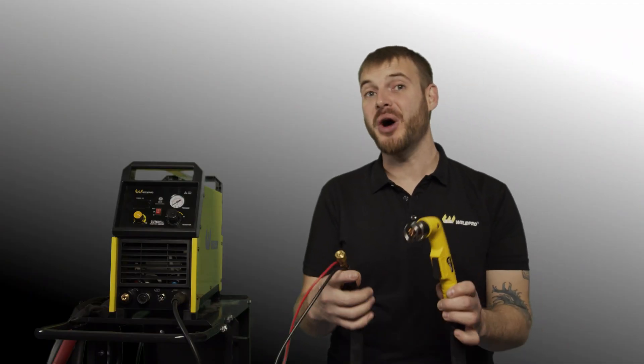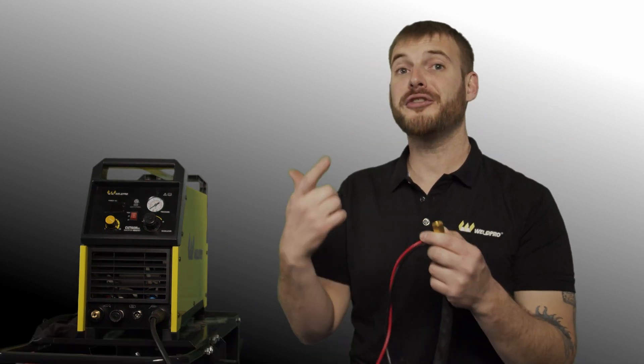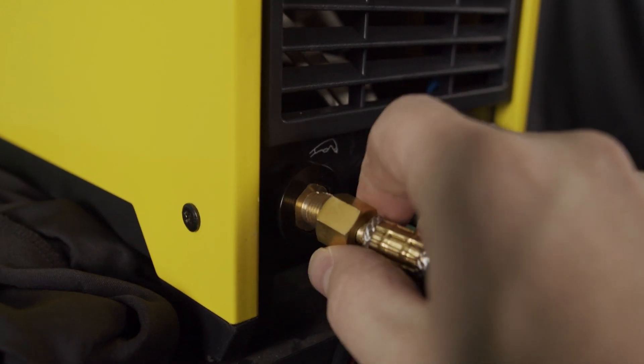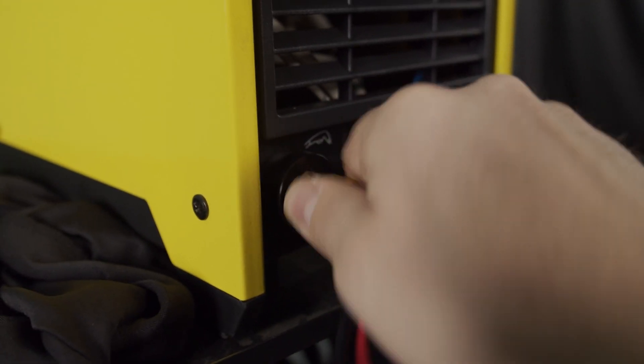The next thing we're going to do is connect our plasma torch to the front of the machine using these three connections. The first thing we're going to hook up is this brass connector onto the threaded screw on the front of the machine. This provides the welding current as well as the air supply to the torch.